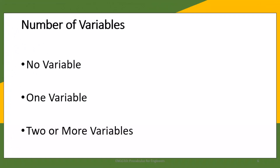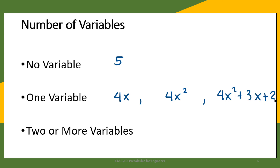A polynomial may also contain no variables, one variable, or two or more variables. In the case where the term is a constant — such as 5 — there is no variable. With one variable, examples include 4x, 4x squared, or 4x squared plus 3x plus 2, where the only variable is x. A polynomial may also contain two or more variables, such as 2xy or 2x squared y squared plus 4xy.